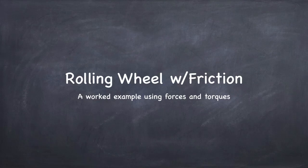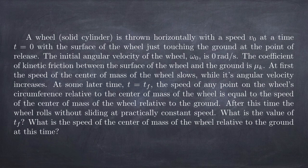Welcome back — it's time for another worked example. This time we're dealing with a rolling wheel with friction. We have a wheel rolling along with sliding friction between the point of contact and the ground. For this example, we'll be using the notion of force and torque to work out the answer. We have a solid cylinder thrown horizontally with an initial speed v₀. The surface of the wheel is just touching the ground but the initial angular velocity is zero — that means the thing is not rotating at all. As time goes on, the frictional force between the sliding point of contact and the ground causes the wheel to rotate, but it simultaneously causes the wheel to slow down.